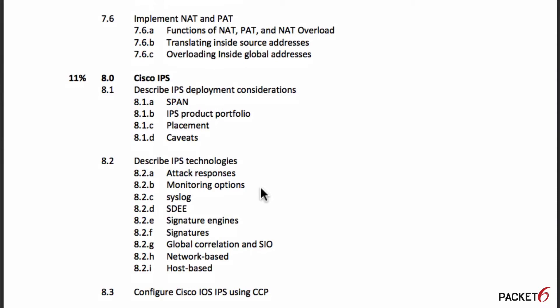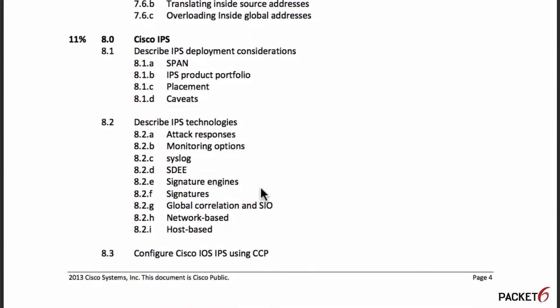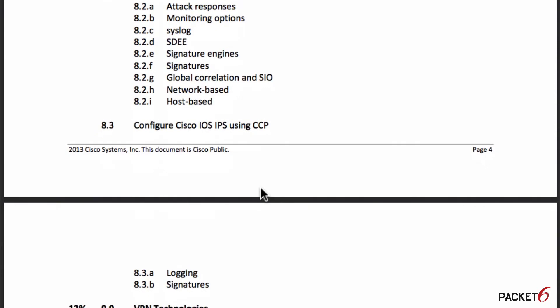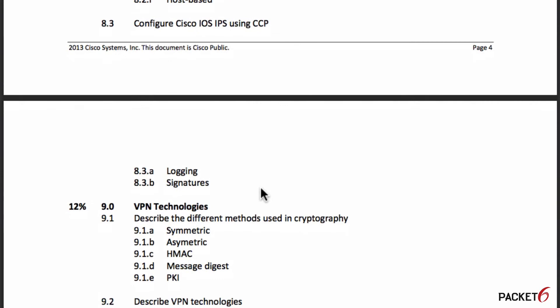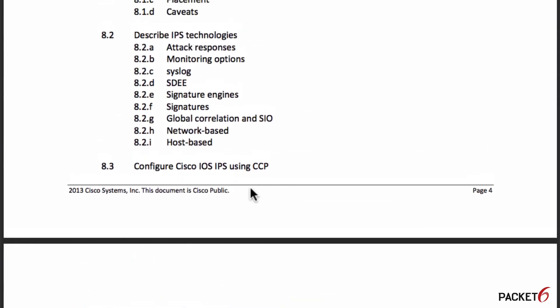Objective 8 is Cisco IPS and covers about 11% of the exam. The objectives are to describe what an IPS is and the different technologies used with IPS, then configure IPS using CCP. The key point is that you're configuring Cisco IOS IPS, not the IPS on a Cisco ASA — so keep that in mind.